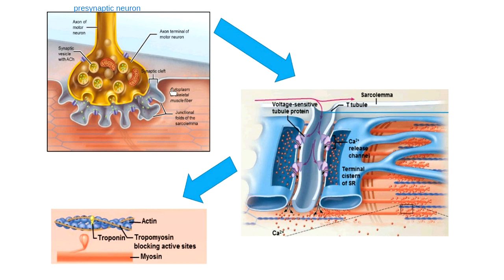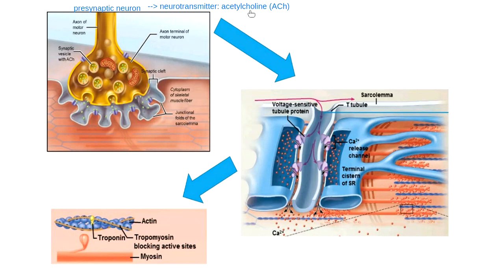There's a specific name for the kind of message that neurons release when talking to a muscle cell — they release a neurotransmitter. The specific neurotransmitter that neurons use to talk to muscle cells is acetylcholine, A-C-H. The language that neurons speak to muscle fibers is always acetylcholine. This is the only message that muscle cells understand. So the neurotransmitter brings a message — the message is always it's time to contract — and that message released is acetylcholine.